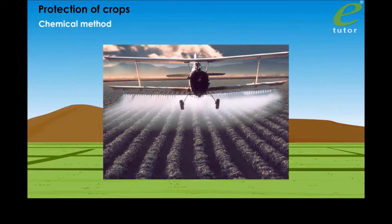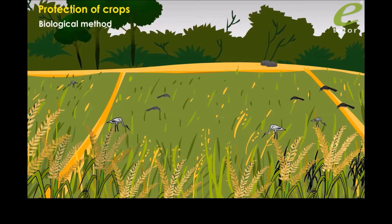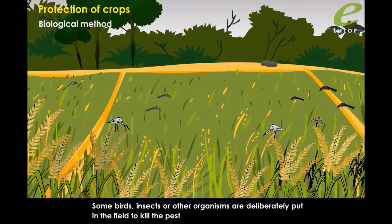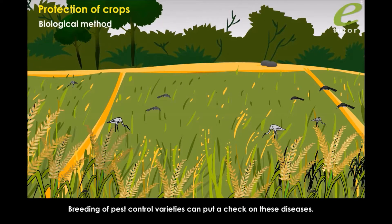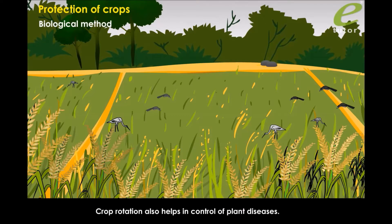to kill pests — this is called the chemical method. Biological method: some birds, insects, or other organisms are deliberately put in the field to kill the pest, and this is called the biological method. Breeding of pest-control varieties can put a check on these diseases. Crop rotation also helps in the control of plant diseases.